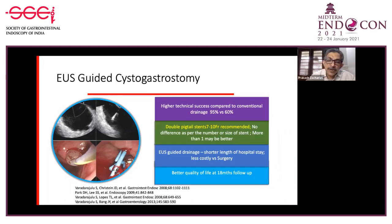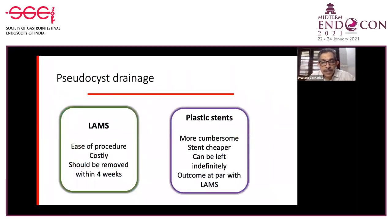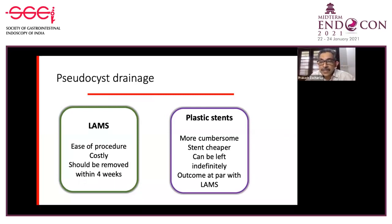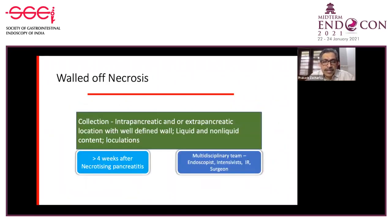EUS-guided drainage gives better quality of life at 18 months of follow-up. LAMS can also be used—it is easy to place but very costly. If placing a LAMS, it should be removed within the next four weeks because there is an increased risk of complications. Plastic stents, though more cumbersome to place, are cheaper and have the advantage of being left indefinitely if there is disconnected pancreatic duct syndrome, with outcomes at par with LAMS.